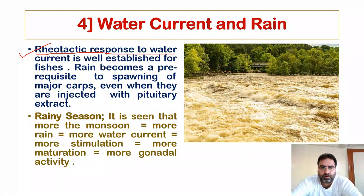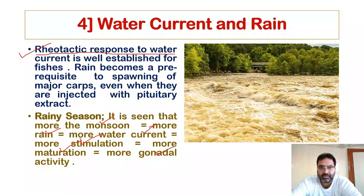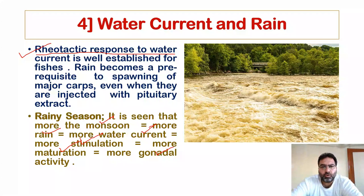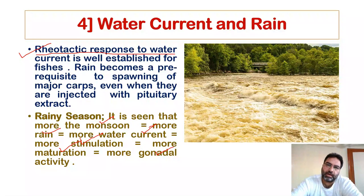More monsoon means more rain, more water current, more stimulation, more maturation, and more gonadal activity. The rainy season stimulates fishes in terms of maturation of the gonads with the help of FSH and LH, increasing gonadal activity so that the fishes mature and are able to release eggs and sperm.